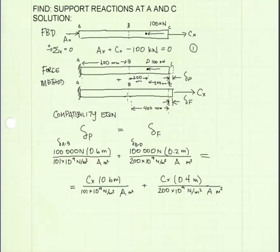And because the material changes at B, I need two terms. One to represent delta from A to B and one that represents delta from B to C.